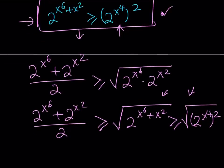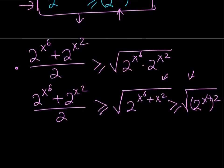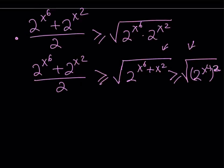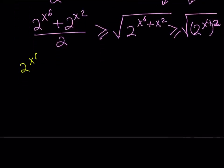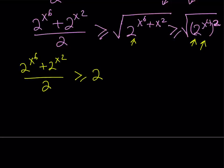So notice that we have the square root of something squared here — that just means it equals 2 to the power x to the fourth. So we can rewrite this: 2 to the power x to the sixth plus 2 to the power x squared, divided by two, is greater than or equal to 2 to the power x to the fourth. The square and the square root cancel each other, so we get that directly.